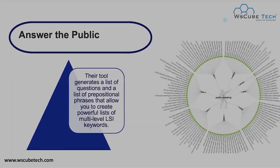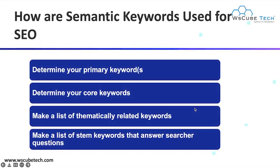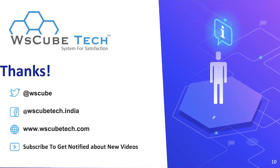After Answer the Public, the question is: how are semantic keywords used for SEO? To use them effectively: determine your primary core keywords, make a list of thematically related keywords, and make a list of keywords that answer searchers' questions. These are the tools and steps you can use to figure out and apply your semantic keywords. Thank you so much for watching this video.